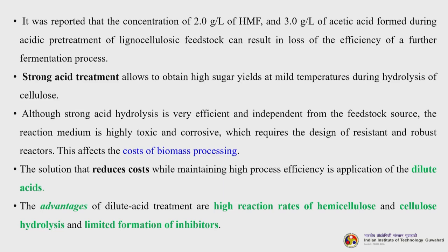Strong acid treatment allows obtaining high sugar yields at mild temperatures during hydrolysis of cellulose. Although strong acid hydrolysis is very efficient and feedstock-independent, the reaction medium is highly toxic and corrosive, requiring design of resistant and robust reactors, which affects the cost of biomass processing. The solution that reduces cost while maintaining high process efficiency is the application of dilute acids, which also reduces the problem of corrosiveness. The advantages of dilute acid treatment are high reaction rates of hemicellulose and cellulose hydrolysis and limited formation of inhibitors.